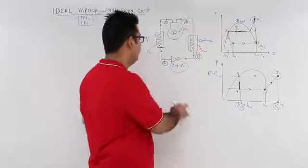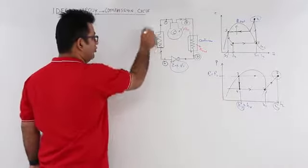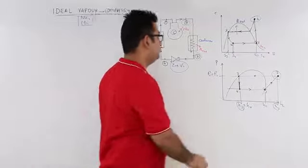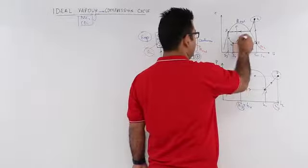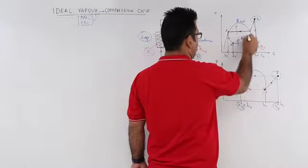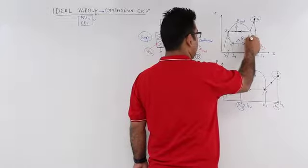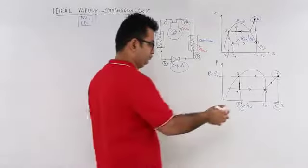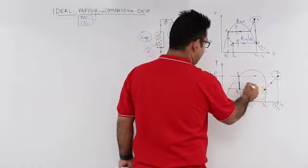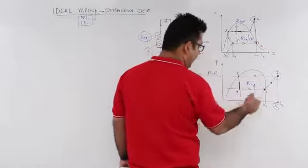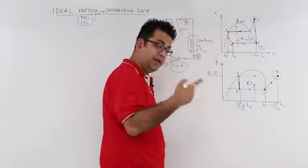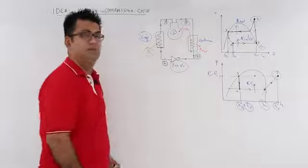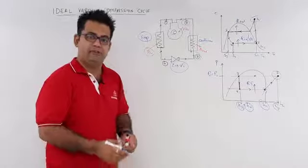From state 4 to 1 you pass through the evaporator, so there is heat input. This is Q in, also known as the refrigeration effect (RE), and you can see that the enthalpy increases from H4 to H1. This completes the ideal vapour compression cycle.